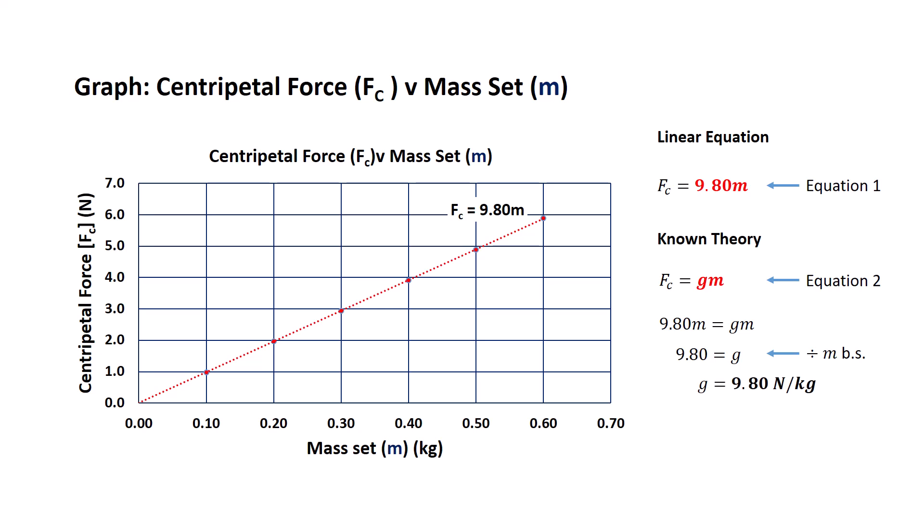Rewritten, this is g equals 9.8 newtons per kilogram, which is the theoretical value for the gravitational field strength on planet Earth.